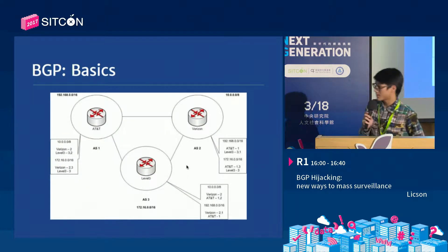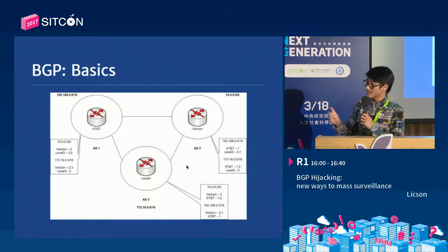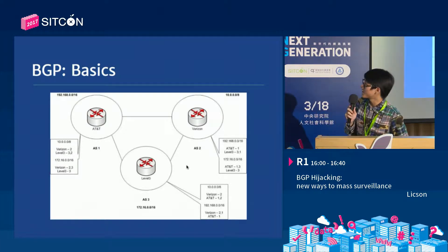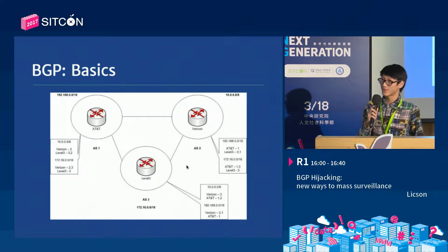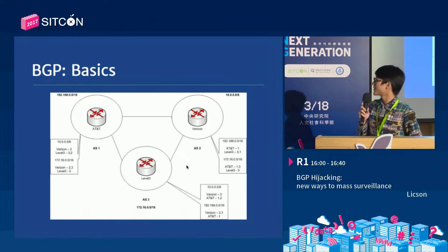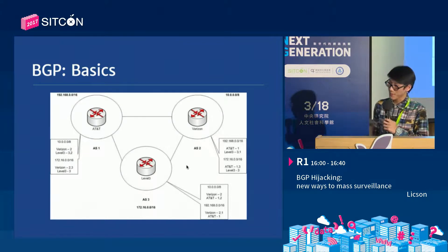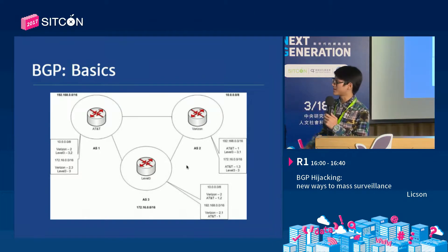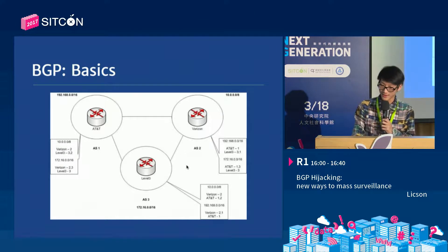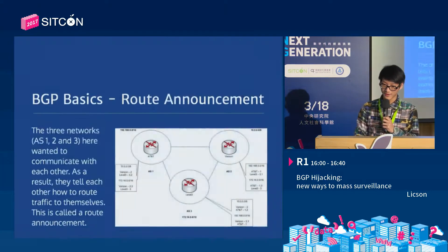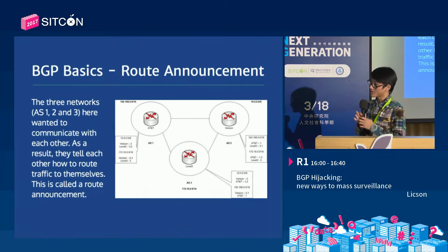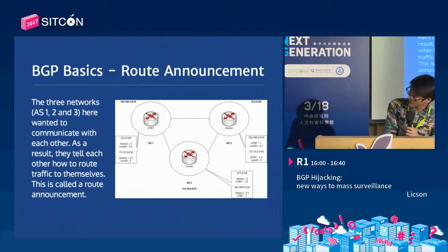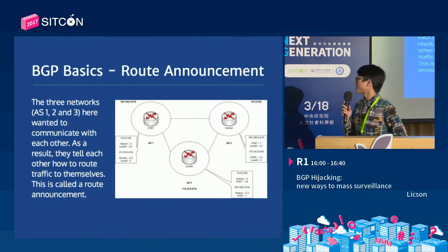The connection between ASes, or the connection of networks, gradually forms the internet. BGP is the protocol for these large companies to exchange routing information - that is, how they are going to reach each other.